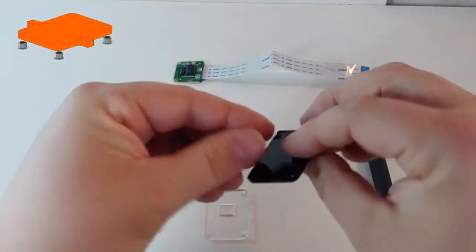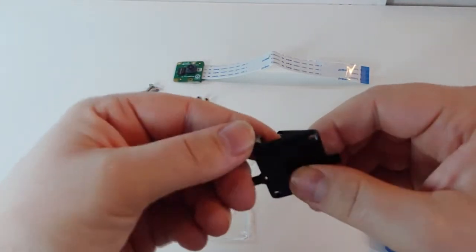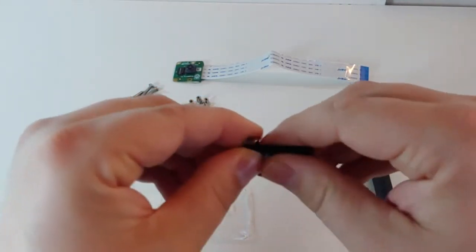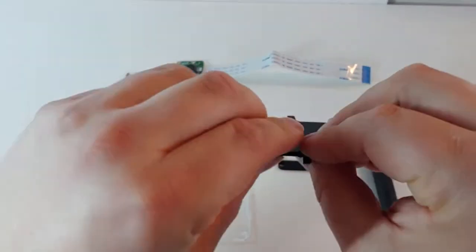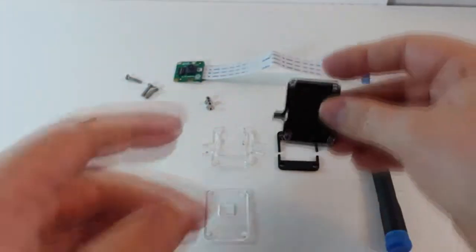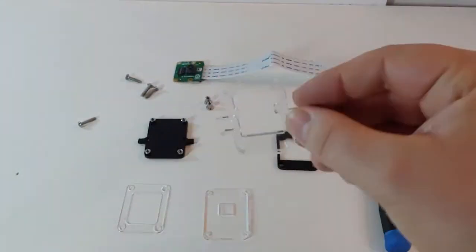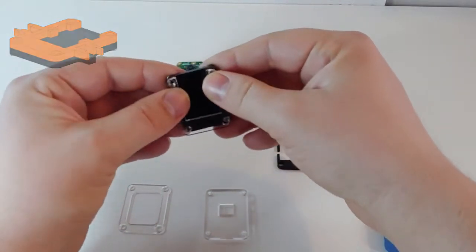You'll want to start by taking the back plate and pressing four of the C4 nuts into the four corners. Next you'll want to take the beetle bracket and carefully press that into the C4 nuts as well.